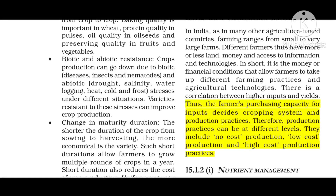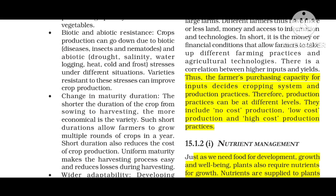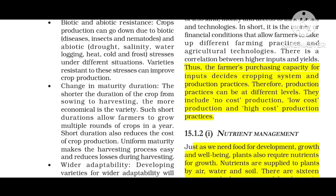Biotic and abiotic resistance — crop production can go down due to biotic factors such as insects and nematodes, and abiotic factors such as salinity, waterlogging, heat, cold, and frost. Resistance to these stresses can improve crop production. Developing varieties with biotic and abiotic resistance helps crops sustain and improve under these conditions.